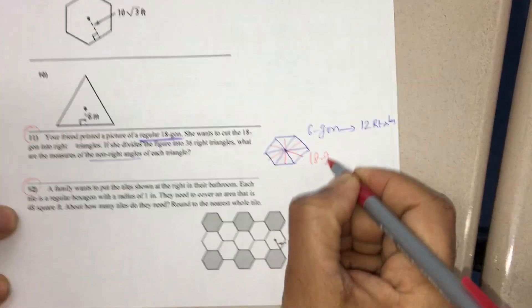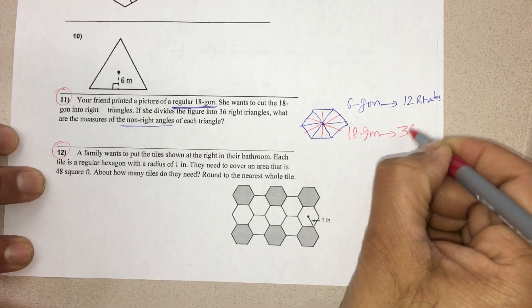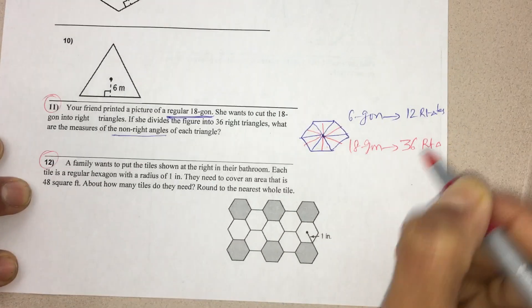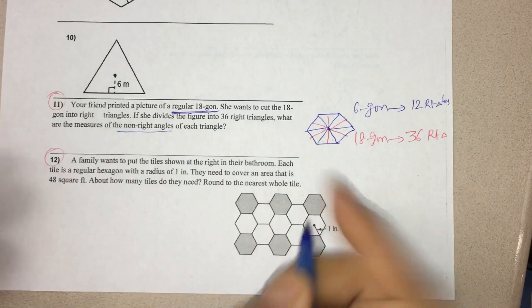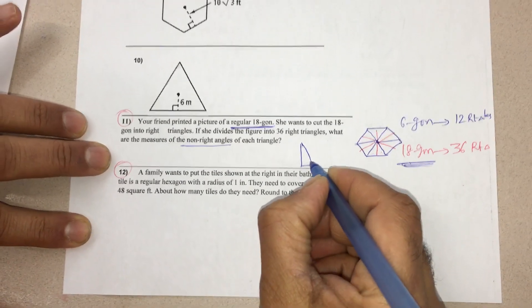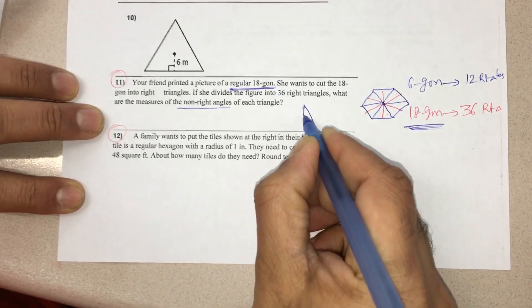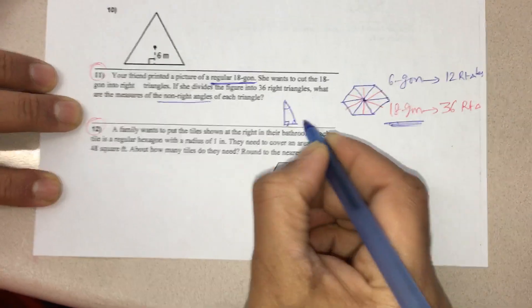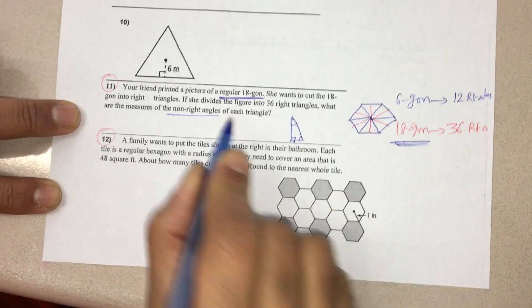In the same way, if it is an 18-gon, I get double to that, so 36 right triangles. Now if I take in the 18-gon one right triangle, this is right angle and these are non-right angles. What are the values? That is the question here.